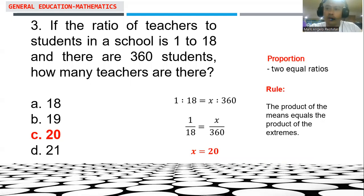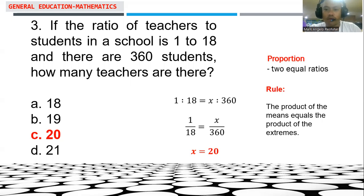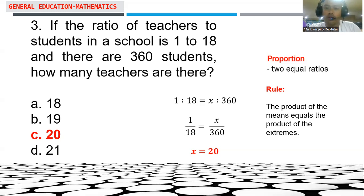We apply the rule: the product of the means equals the product of the extremes. We can denote the proportion as 1 is to 18 equals x is to 360. The ratio of teachers to students is 1 to 18, where 1 represents the teacher and 18 represents the number of students.